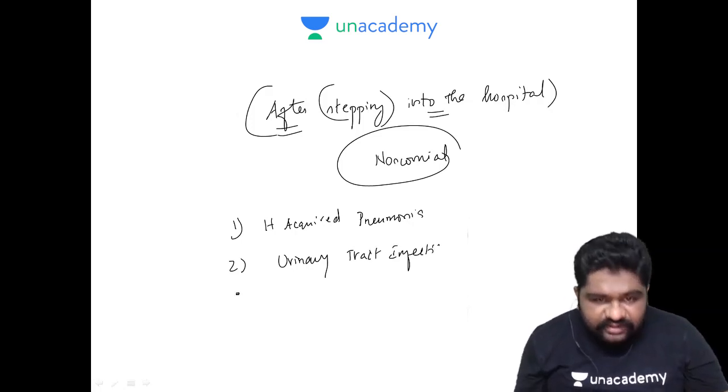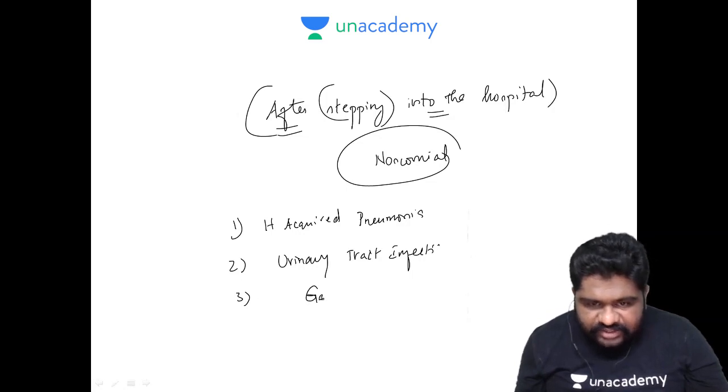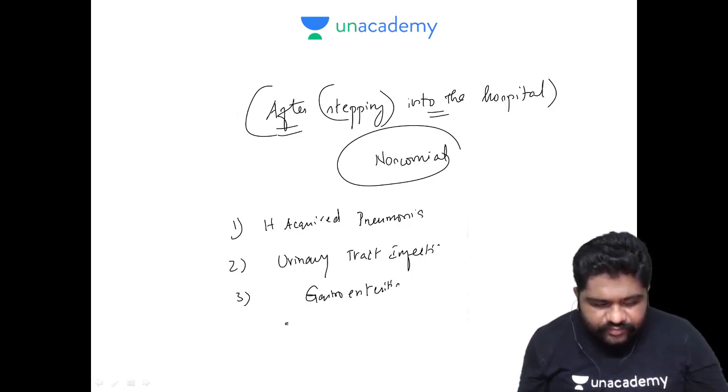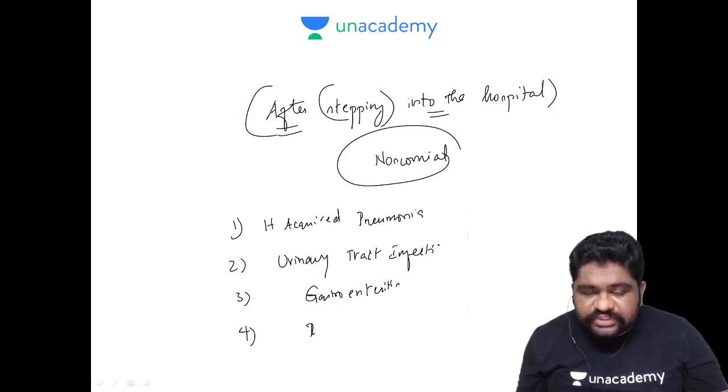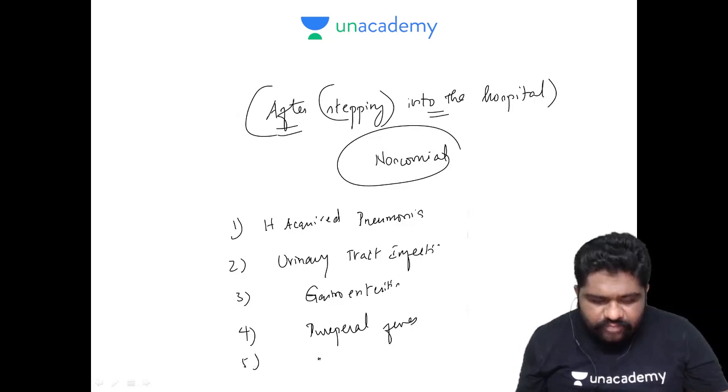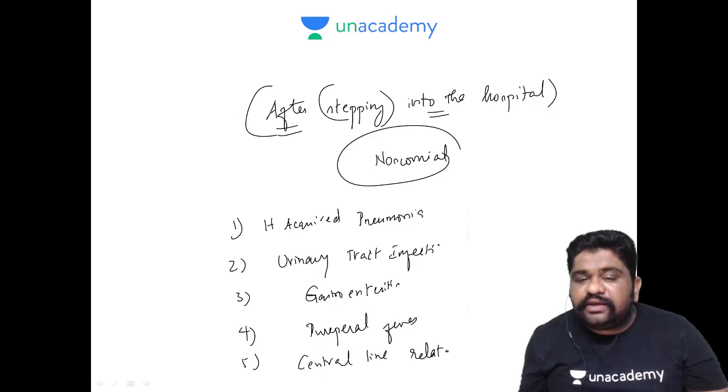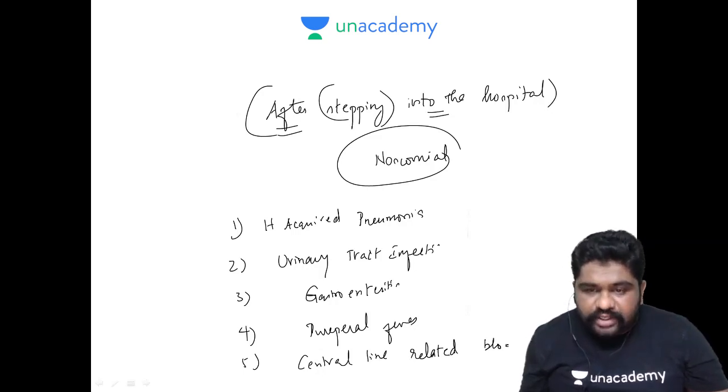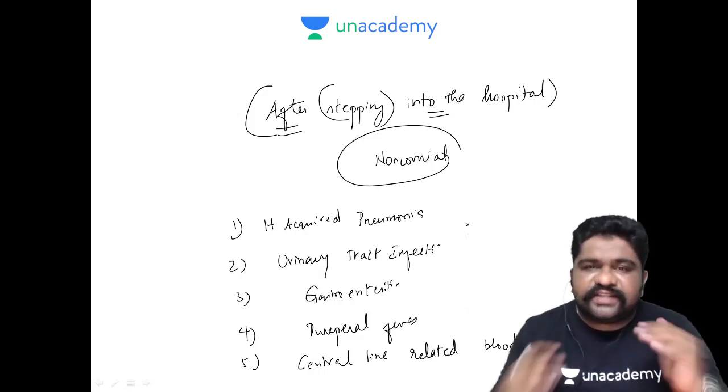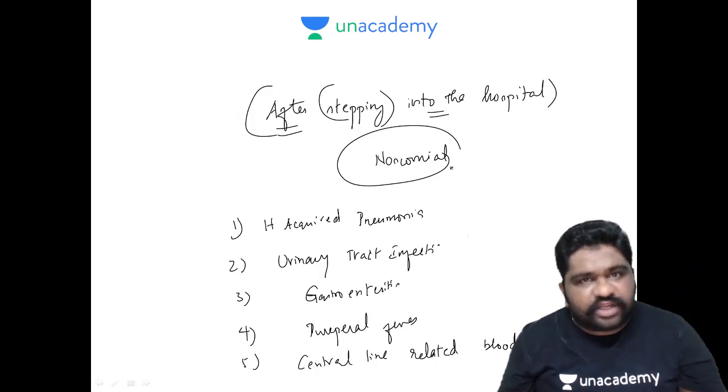Third, Gastroenteritis. Fourth is Puerperal Fever, and fifth is Central Line Related Blood Stream Sepsis. These are the categorizations that come under nosocomial infection.